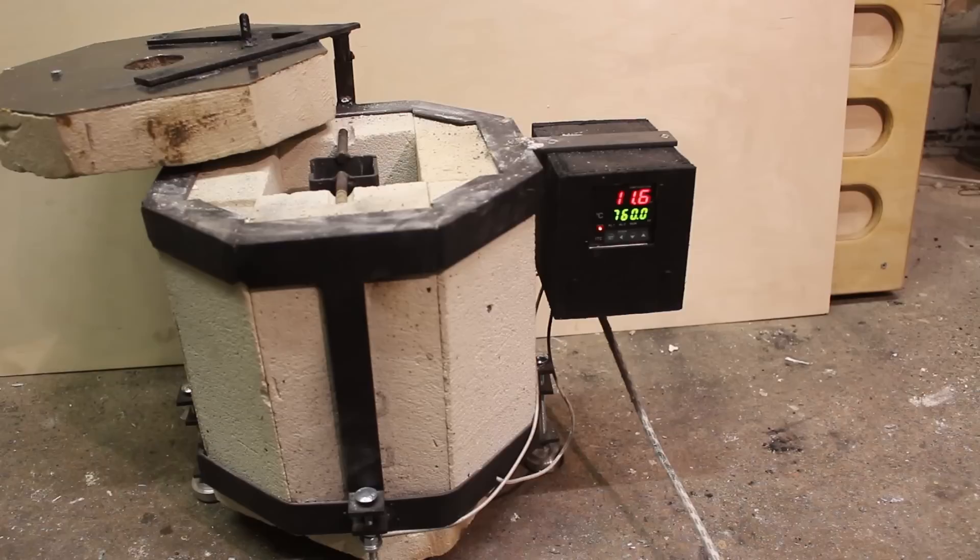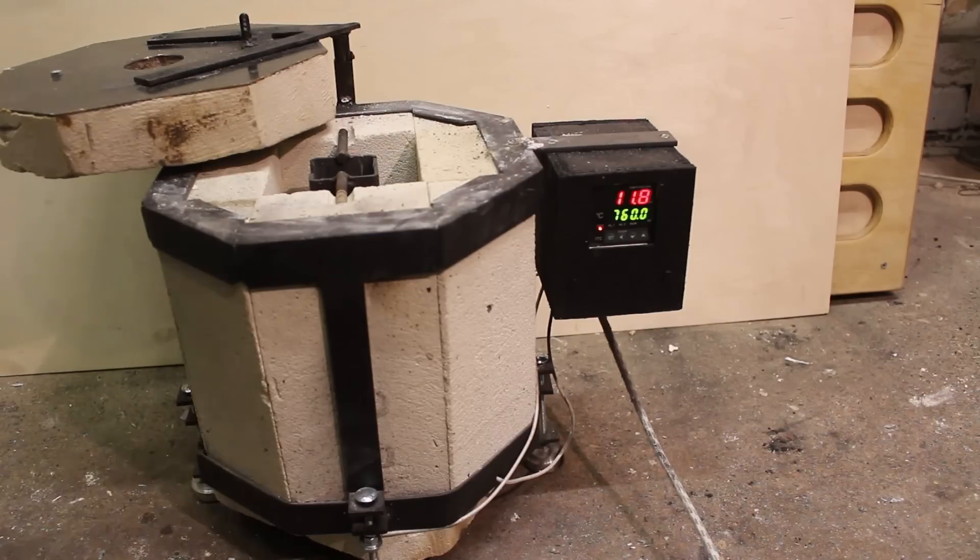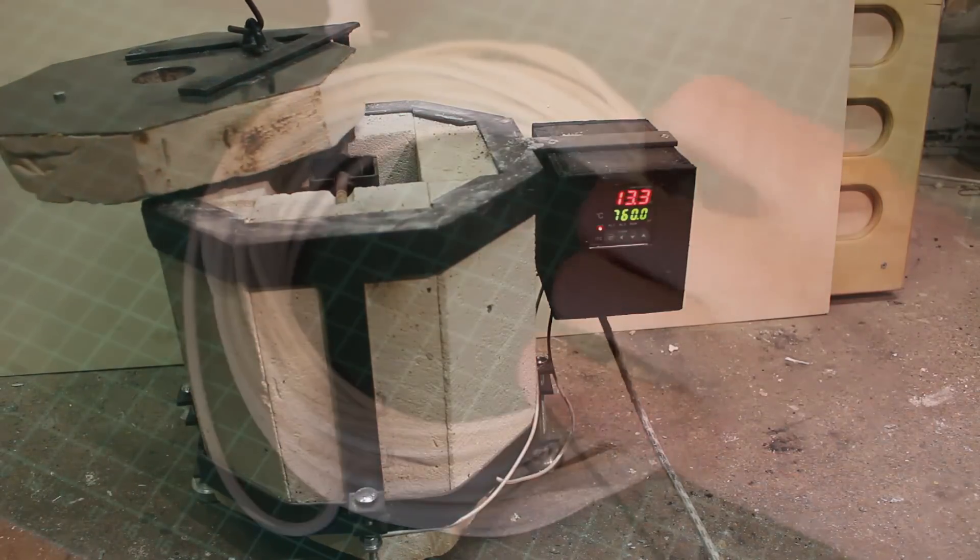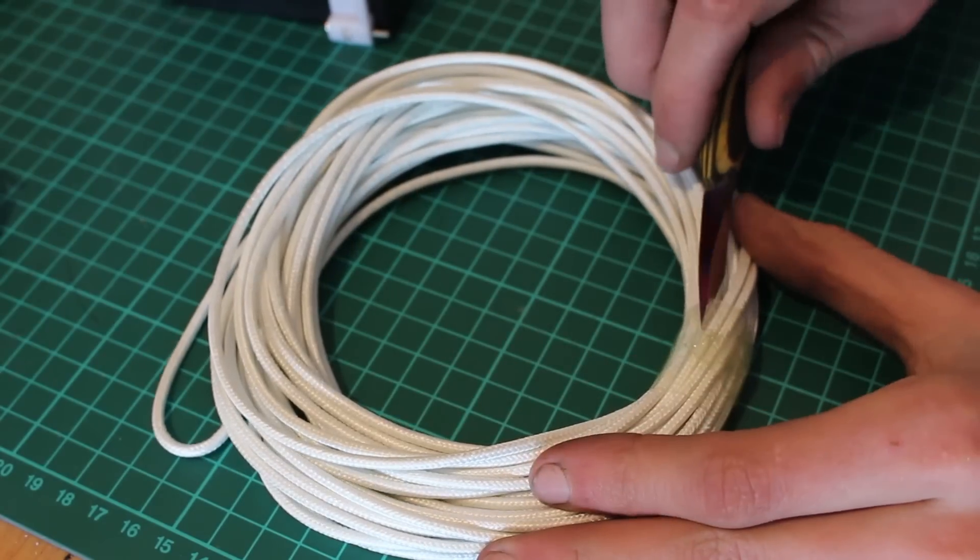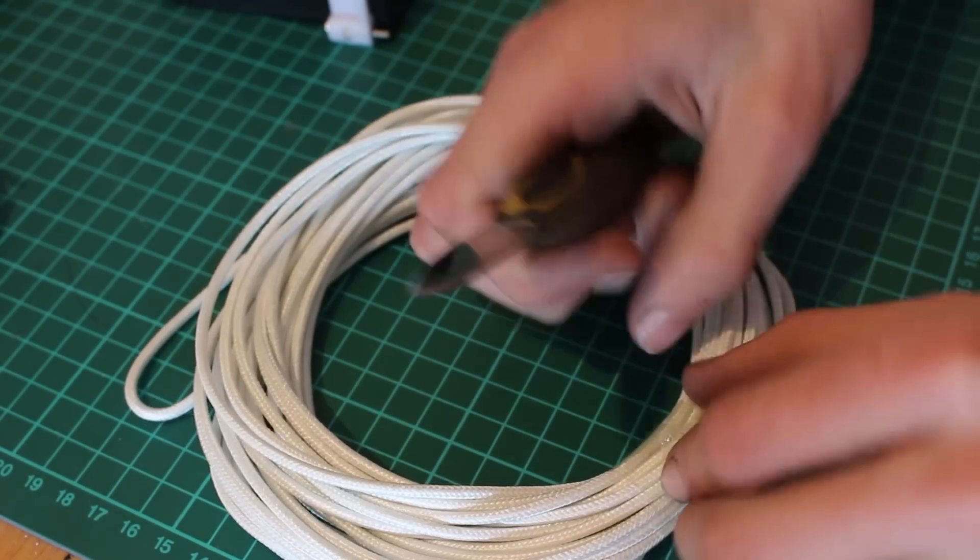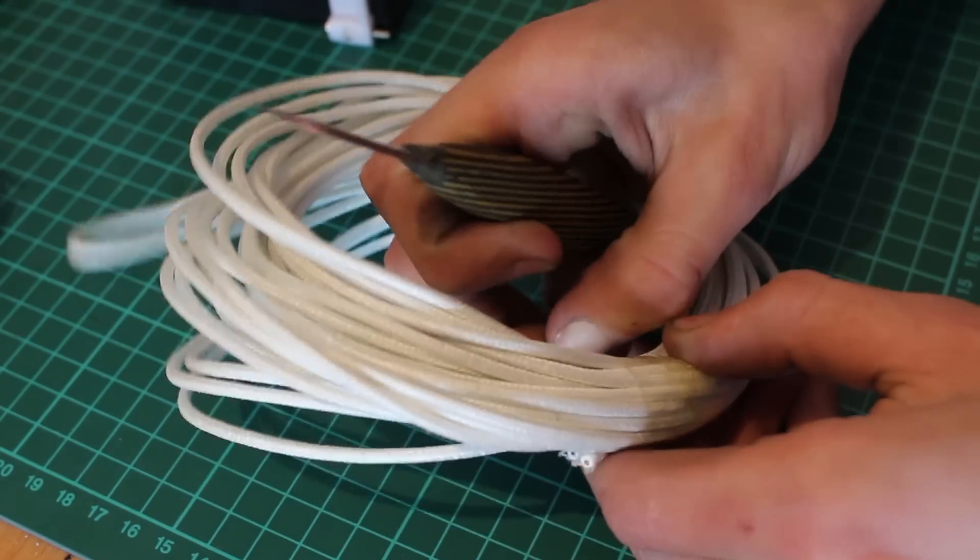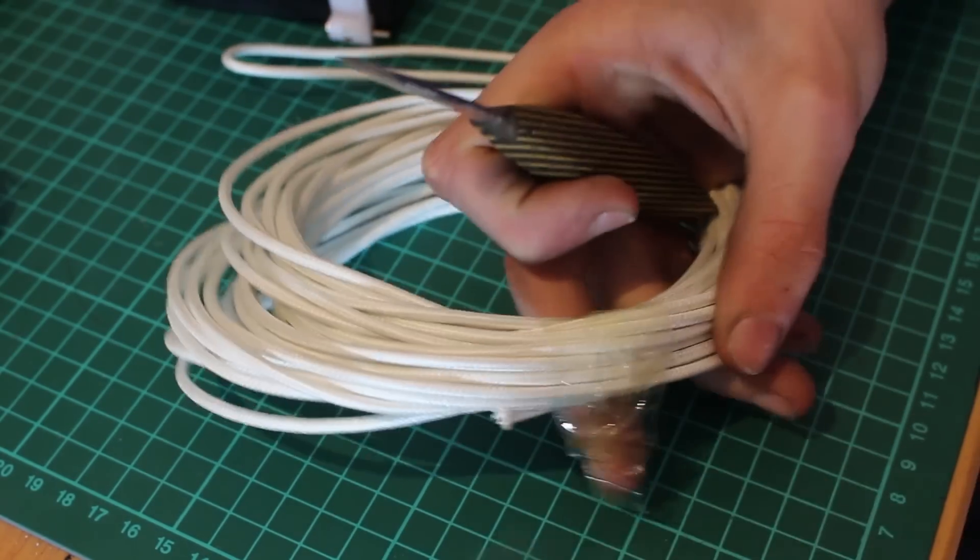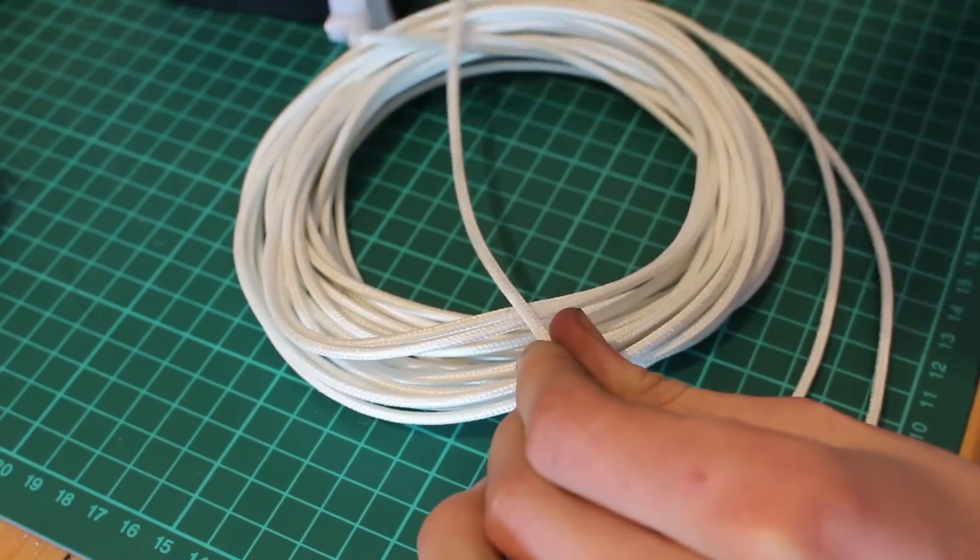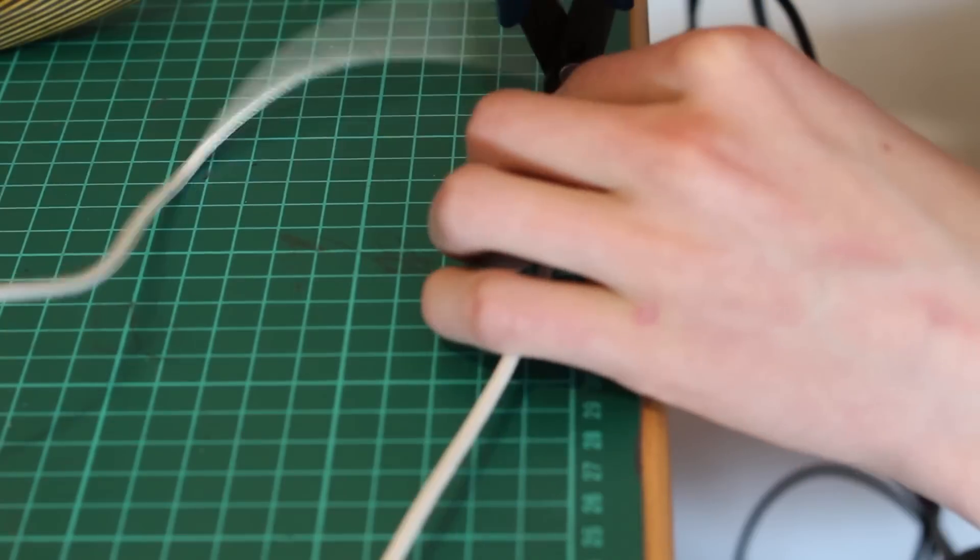Firstly I wanted to get my PID temperature controller up and running since that is going to be the most important upgrade in this build. To connect everything I'm going to be using steel core wire which is fiberglass insulated and can withstand up to 600 degrees Celsius. A massive improvement over the PVC coated wire that I was using previously. So firstly I cut off two lengths and strip the ends.